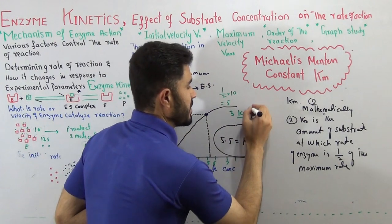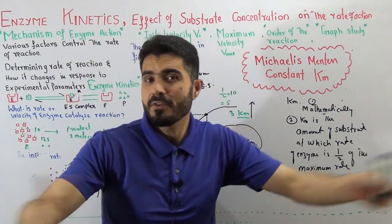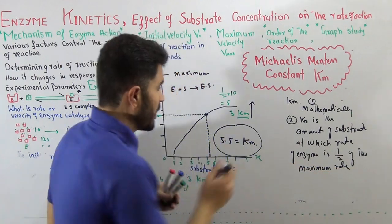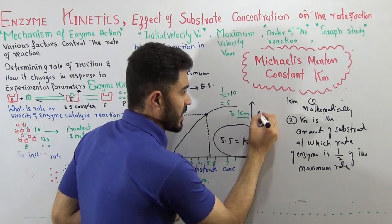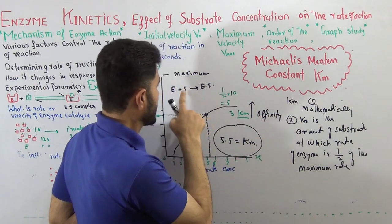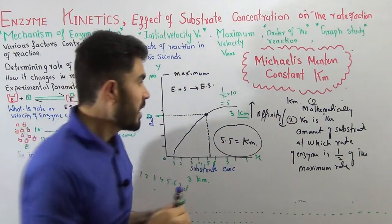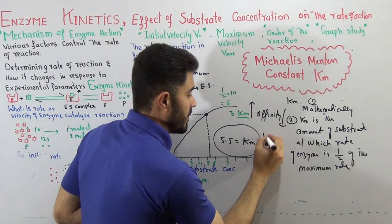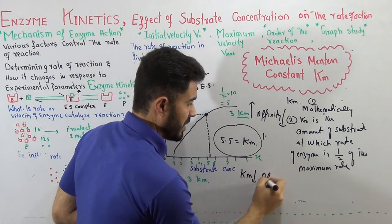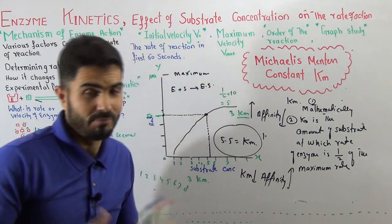If the Km is very high, you can get the Km of any reaction, you can get the Km of any enzyme. If the Km is very high, remember the affinity of substrate with enzyme is less. If the Km is less, the affinity will be high and vice versa.